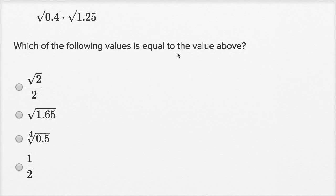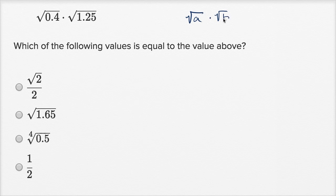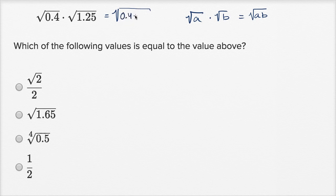Which of the following values is equal to the value above? We have the square root of 0.4 times the square root of 1.25. We could use a radical property here: the square root of a times the square root of b is equal to the square root of a times b. So in this case, a is 0.4 and b is 1.25, so this is the same thing as the square root of 0.4 times 1.25.